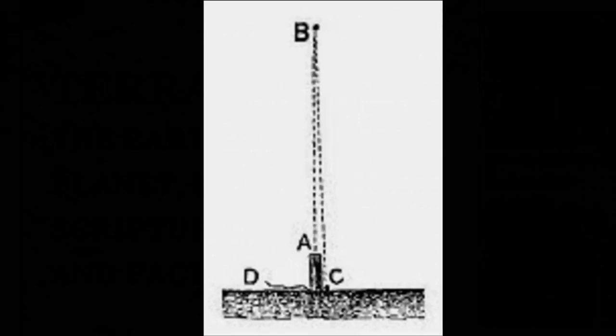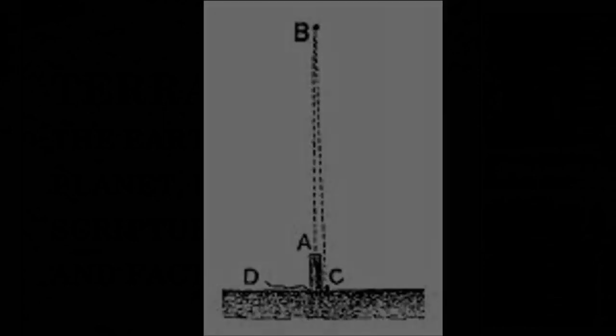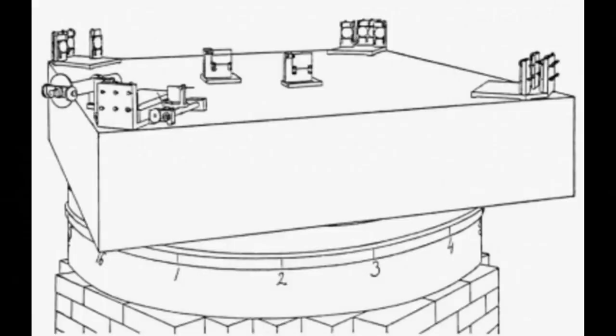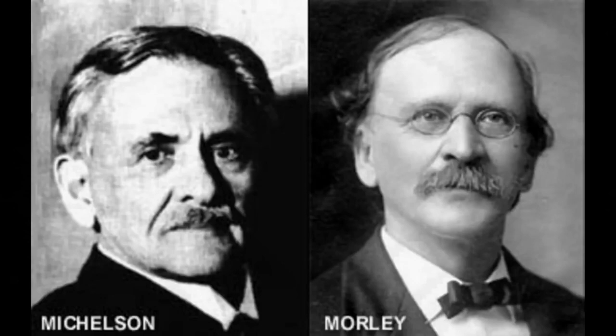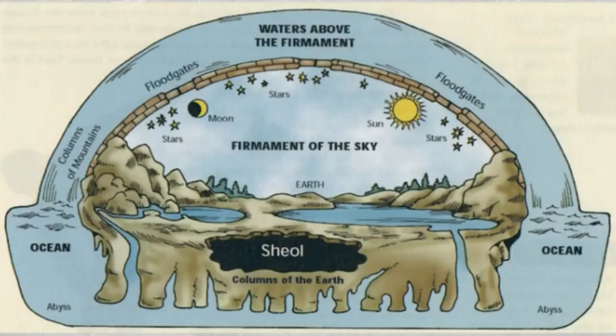If there was any spin to the Earth causing a Coriolis effect, it would have been discovered by now. Yet every single experiment ever performed to detect the motion of the Earth has resulted in a null result. In other words, the Michelson-Morley experiment. Real life experiments have proven that there is no Coriolis effect on Earth because the Earth is stationary.